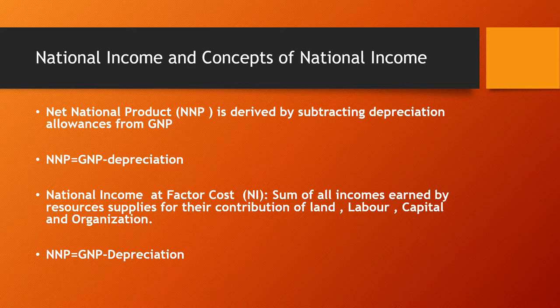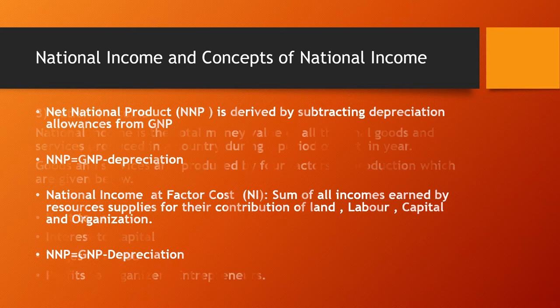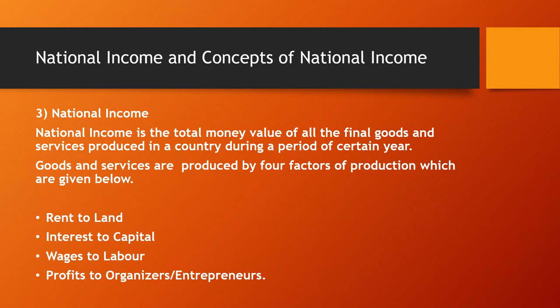NNP = GNP minus depreciation. National Income is the total money value of all final goods and services produced in a country during a certain year. Goods and services are produced by four factors of production: rent to land, interest to capital, wages to labor, and profit to the organizer and entrepreneur.